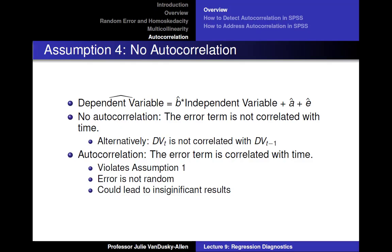Next, the fourth assumption of ordinary least squares regression deals with time series models, where we have multiple observations for our subjects over time. In these models, we assume that the error term is not correlated with time. Alternatively, we assume that the value of our dependent variable in one time period is not correlated with the value of our dependent variable in a previous time period. When we violate this assumption, it is called autocorrelation — the error term is correlated with time, it is not random. This could lead to insignificant results for our coefficients.